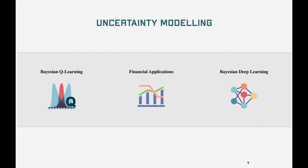Hello everybody, my name is Brandon Da Silva. I work at OP Trust as an Associate Portfolio Manager and today we're going to be talking about Bayesian machine learning — specifically how we can use that for uncertainty modeling and why we even care about uncertainty modeling. We're going to start off by talking about Bayesian Q-learning, then move into how we can apply this to your investment strategy, and lastly talk about supervised learning and how we can use Bayesian deep learning to improve forecasting.